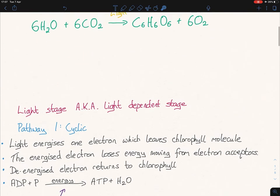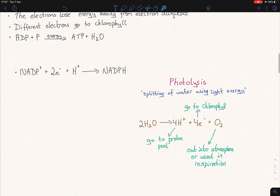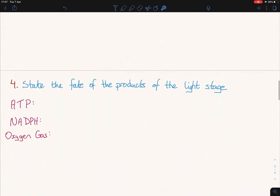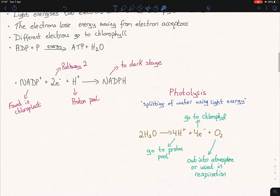This is pathway two now. So to recap pathway two, non-cyclic. Light energizes two electrons. They leave the chlorophyll molecule. Electrons lose energy from electron acceptor to electron acceptor. Different electrons go to the chlorophyll. Whereas these two electrons, they react with NADP+ and H+ to produce NADPH. The H+ comes from the water molecule or compound over here. And oxygen is also coming from the splitting of water. So you'll see back up here at the top, the oxygen gas is produced. This is why it's been produced, due to photolysis.